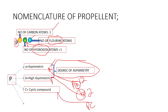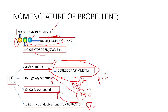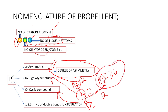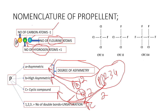Some propellant names contain four digits, such as one, two, three, four. In that case, the first digit indicates the degree of unsaturation, meaning the number of double bonds. For example, if it is two, then two double bonds are present. These are the basic ideas about the nomenclature of propellants.